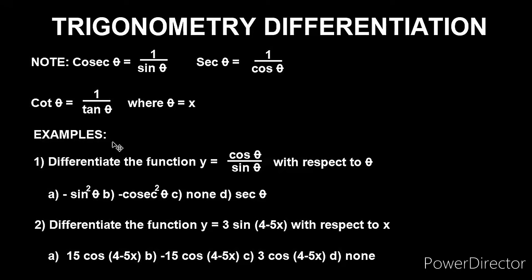Example one says: differentiate the function y equals cos θ over sin θ with respect to θ. The options are: option A — minus sine squared θ, option B — minus cosec squared θ, option C — none, option D — sec θ. Let's bring the calculator and solve this problem together.